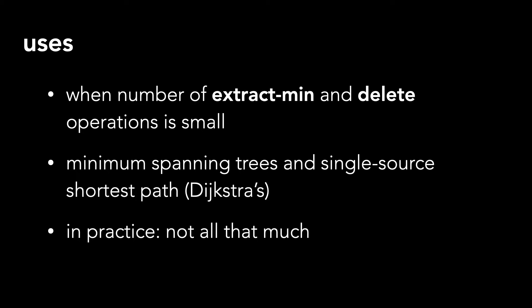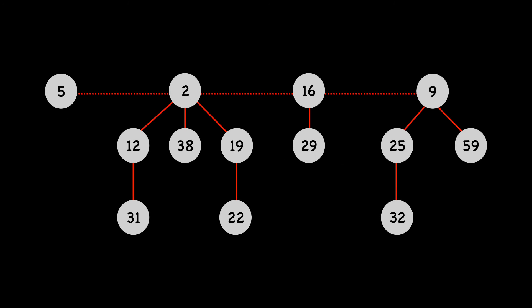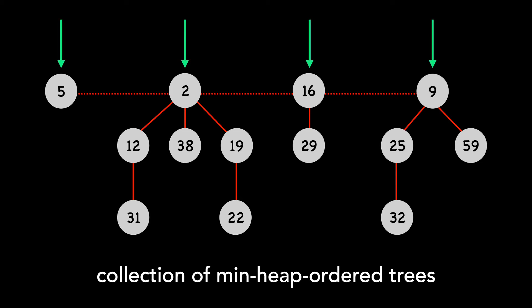Let's take a look at the structure of Fibonacci heaps. A Fibonacci heap is a collection of min-heap-ordered trees. Here we have four min-heap-ordered trees. Remember from my heap video that the min-heap property means that the key of a node is greater than or equal to that of its parent.